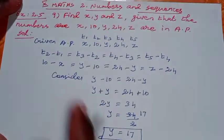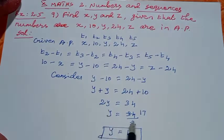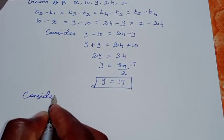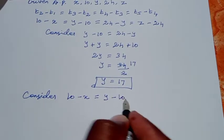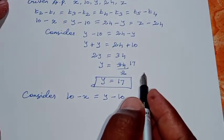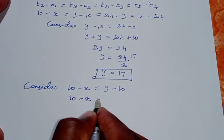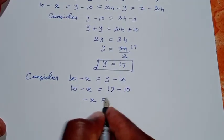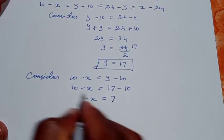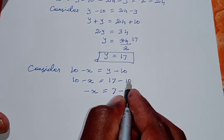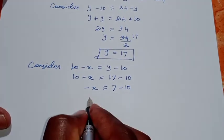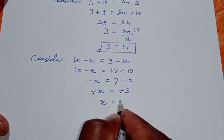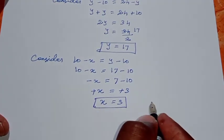Now consider the first two terms to find x. We have 10 minus x equal to y minus 10. Since y equals 17, that gives 10 minus x equal to 17 minus 10, which is 7. So 10 minus x equals 7, therefore x equals 3.